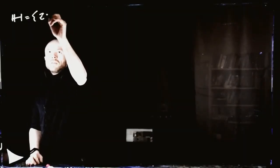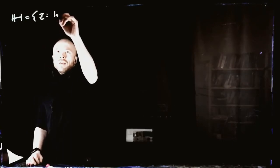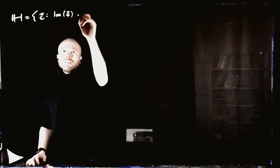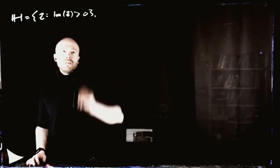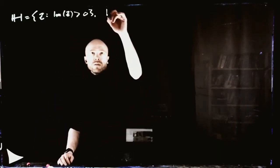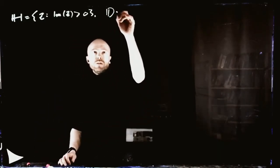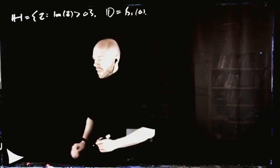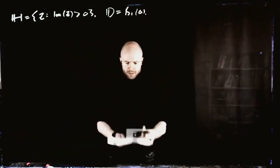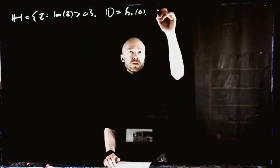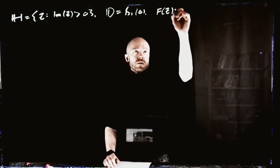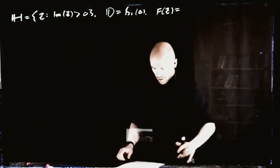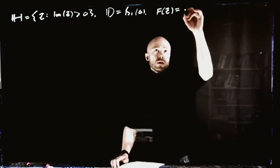We're going to study in detail one particular conformal mapping between two sets: the upper half-space, given by the set of complex numbers whose imaginary part is bigger than zero, and the unit disk, which is just a ball of radius 1 around zero. These are the mappings we are going to study.